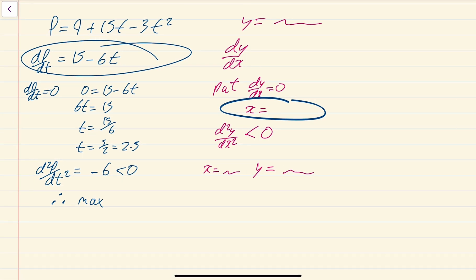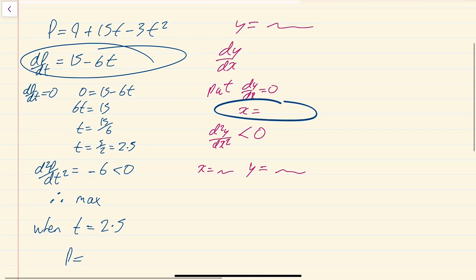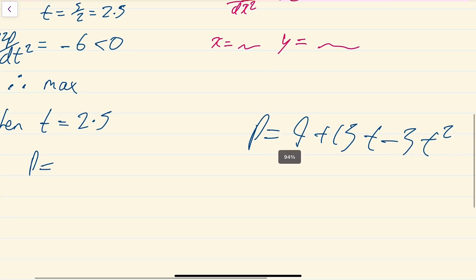When t = 2.5, we find P by putting it back into the original equation. P = 9 + 15t - 3t², so we substitute t = 2.5 into this equation.